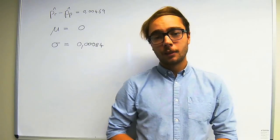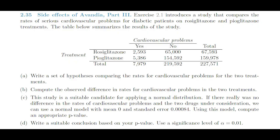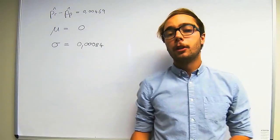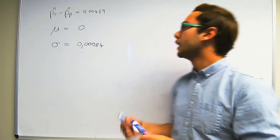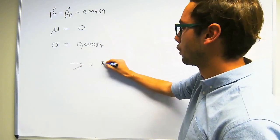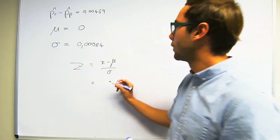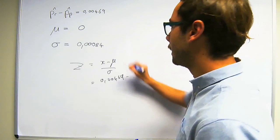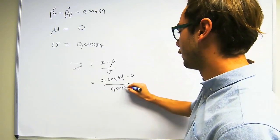We now consider question C. Question C says this study is a suitable candidate for applying a normal distribution. If there really was no difference in the rates of cardiovascular problems between the two drugs under consideration, we can use a normal model with mean 0 and standard error 0.00084. Using this model, compute an appropriate p-value. To compute the p-value, we begin by finding the z-value associated with the difference in proportions. The formula for z is our observation — the difference in proportions — minus the mean, over the standard deviation. Substituting our values: 0.00469 minus 0, divided by 0.00084, gives us a z-value of 5.58.